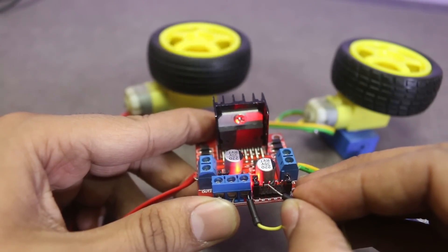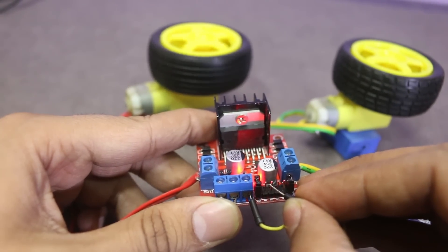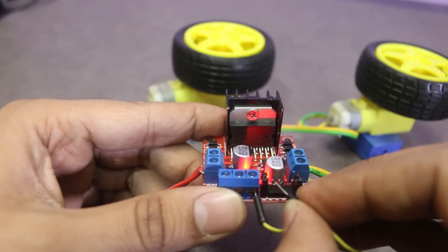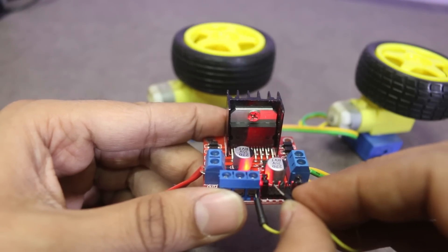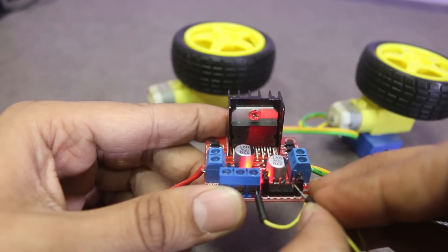When input 2 is high, motor is running in a different direction. You can see the same thing happening to motor B when input 3 and input 4 are high.